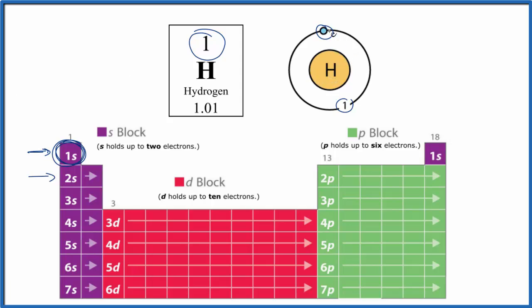So this is the Bohr model or Bohr diagram for the hydrogen atom. If you need help figuring out the electron configuration, this one's pretty easy, 1s1.